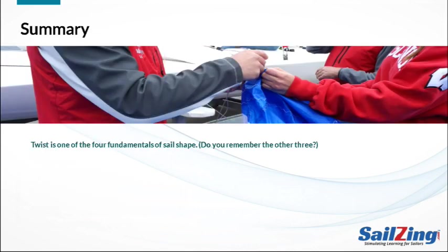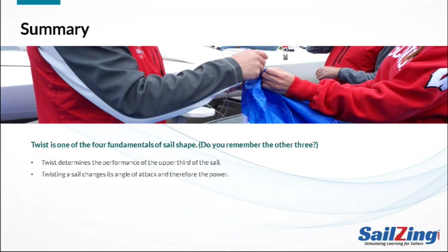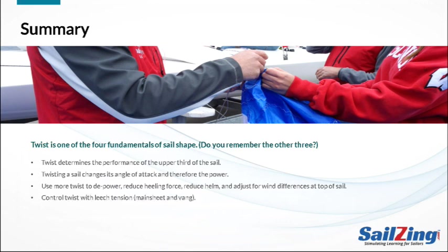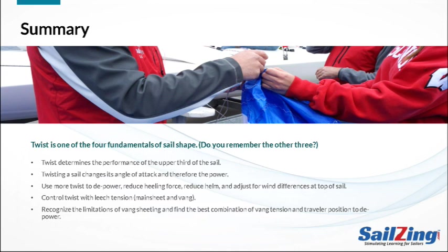Let's summarize. Twist is one of the four fundamentals of sail shape. Key points: twist determines the performance of the upper third of your sail; twisting a sail changes its angle of attack and therefore power; you need more twist when you want to depower, reduce heeling force, reduce helm, and adjust for wind differences at the top of the sail or pitching. The main controls for twist are leech tension through the mainsheet and vang. Vang sheeting is a very important technique, but recognize its limitations and find the best combination of vang tension and traveler position to depower. Finally, light air requires active measures to induce twist.